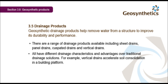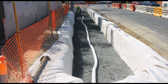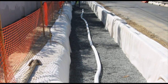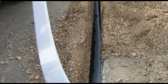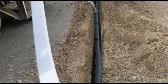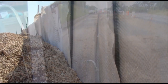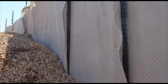All drainage products have different drainage characteristics and advantages over traditional solutions. For example, vertical drains accelerate soil consolidation in a building platform. A traditional road edge drain has a plastic pipe within a gravel filter layer, all within a wide trench encapsulated by a geotextile. A geosynthetic road edge drain allows a thinner trench, dramatically reducing the cost of imported backfill and speeding up construction time. A sheet drain behind a retaining wall will reduce the water pressure on the back of the wall.